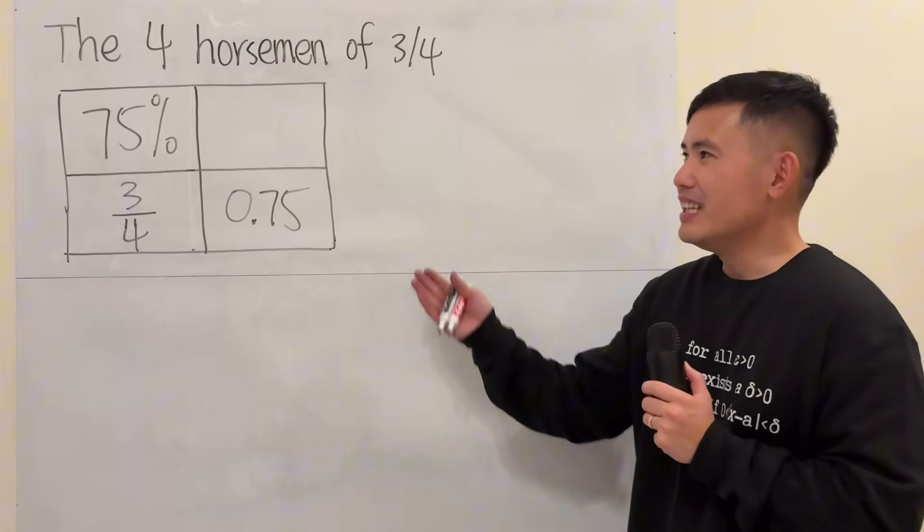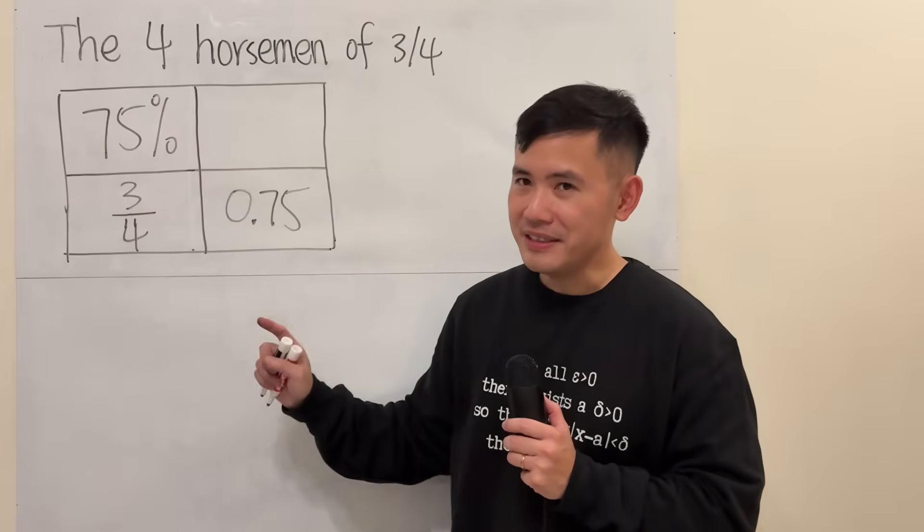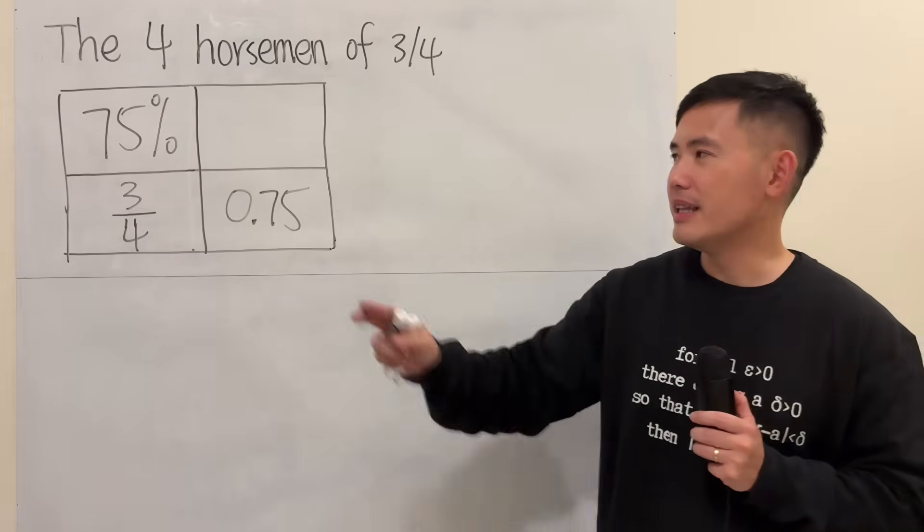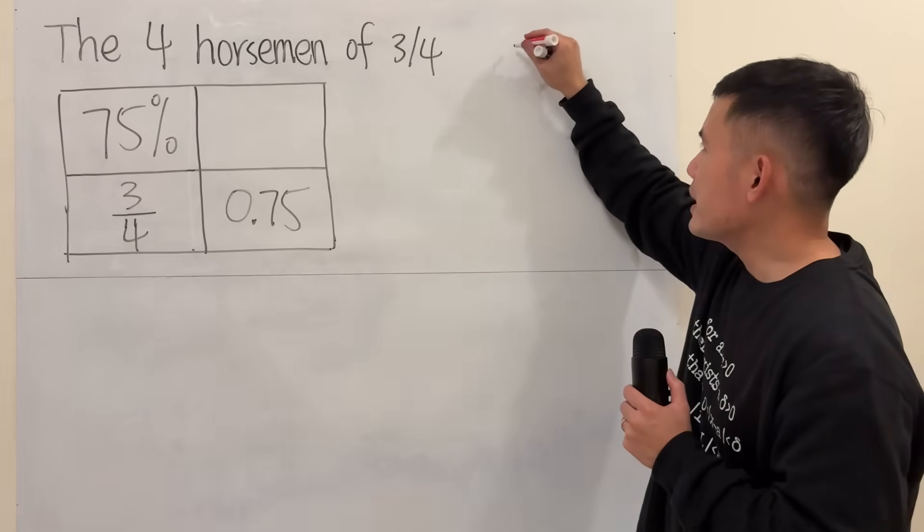Well, firstly, this picture shows 3 over 4 because we have 4 equal parts, and then 1, 2, 3, 3 of them are filled in, and this one's missing, so this picture shows 3 over 4.